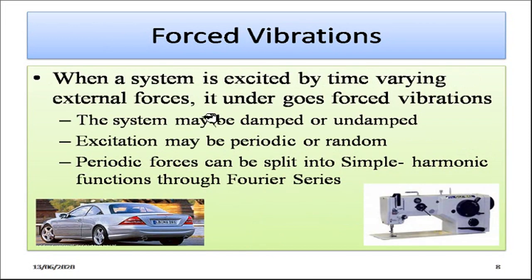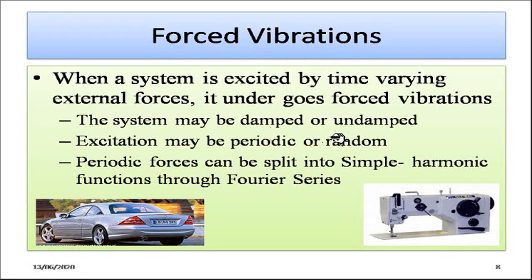Forced vibration occurs when the system is excited by time-varying external forces. For example, in an automobile the engine provides continuous excitation causing vibrations. A machine driven by an electric motor is also under forced vibration. In forced vibration, the system may be damped or undamped, and the excitation may be periodic or random. Periodic forces can be split into simple harmonic functions using Fourier series.